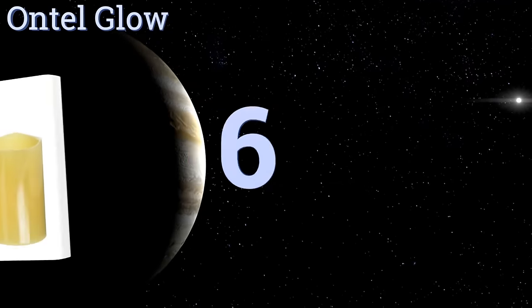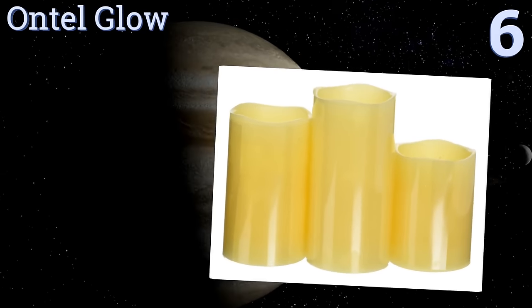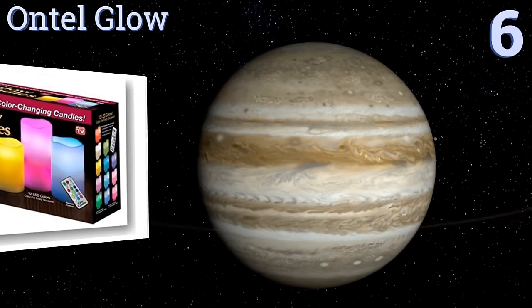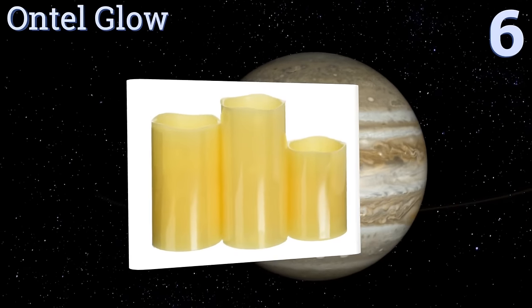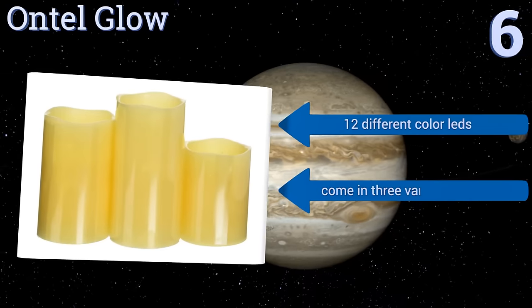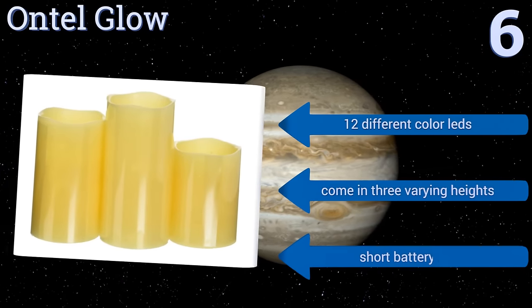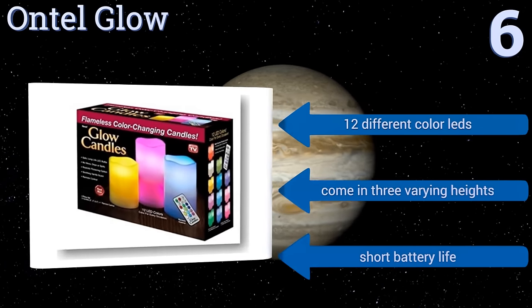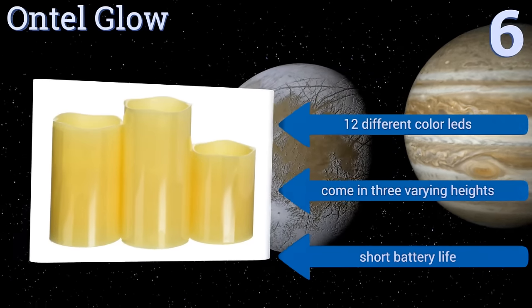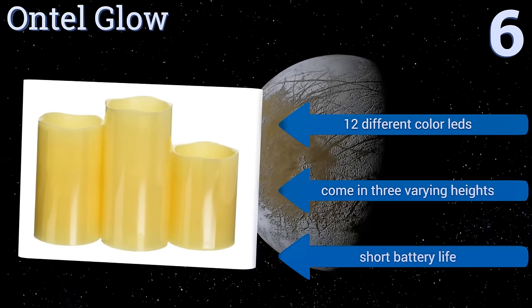Moving up our list to number 6, the Ontel Glow are flameless, dripless and have the option of a steady glow or a flicker, so you can use them for illumination or to set the mood. Each one also features a built-in timer with automatic shut-off, making them great to use as a child's nightlight. They boast 12 different colour LEDs and come in three varying heights. However, they suffer from a short battery life.